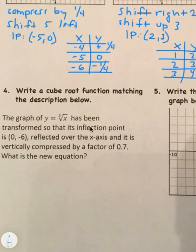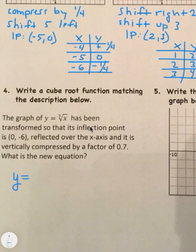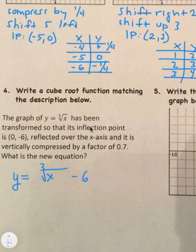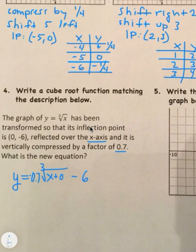Number four: write a cube root function matching a description. The inflection point is (0, negative 6), reflected over the x-axis, and vertically compressed. Since the inflection point is at zero, nothing goes inside the cube root. Outside, we have minus six for the downward shift. It's reflected, so the coefficient is negative, and compressed means a value of 0.7. So the function is y equals negative 0.7 times the cube root of x, minus 6.